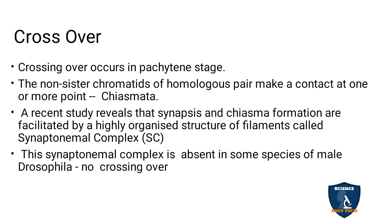Crossing over takes place in the pachytene stage. Two non-sister chromatids of homologous chromosomes meet at a point called the chiasma. The synapsis and the chiasma formation together produce a higher organized structure — the synapsis and the pairing of homologous chromosomes and the chiasma point together form a complex called the synaptonemal complex. They may ask this in two marks.